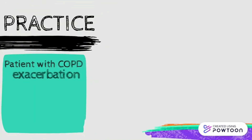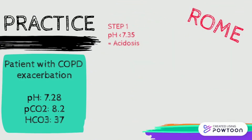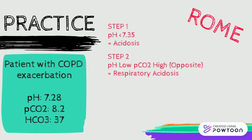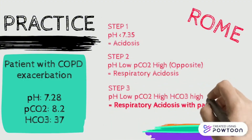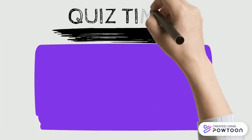Let's practice. Patient with COPD exacerbation — a typical case — and this is your ABG. First, we look at the pH: it's less than 7.35, so it's acidosis. Number two, we look at the CO2: pH is low but CO2 is high, so they're against each other — this is respiratory acidosis. Third, we look for compensation: bicarbonate is also high. So pH low, CO2 high, bicarb high — this is respiratory acidosis with partial compensation. It's partial because the pH is still not back to normal.